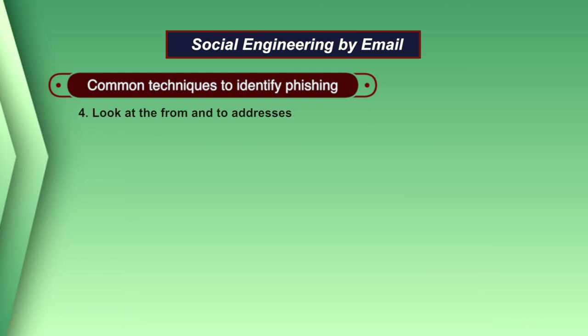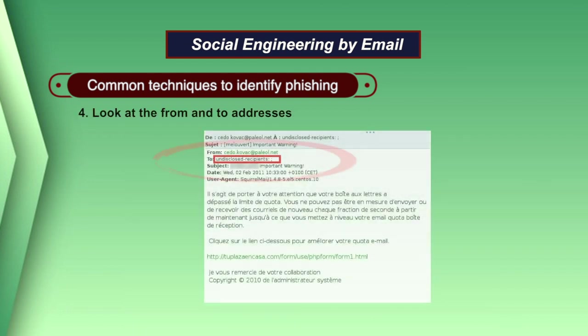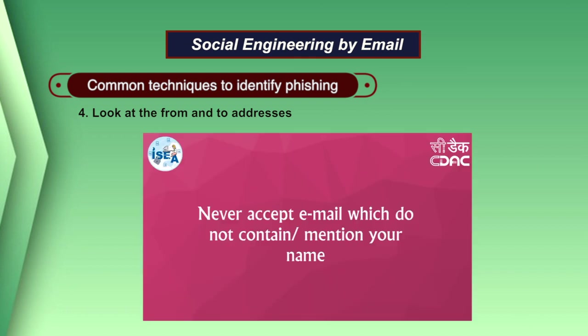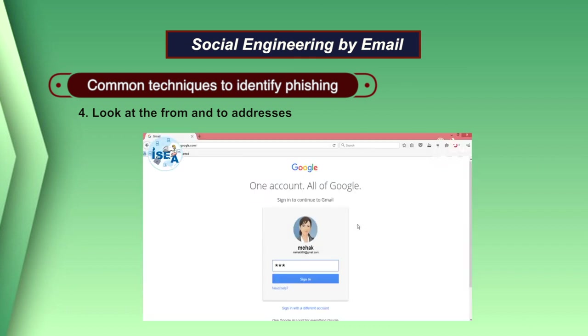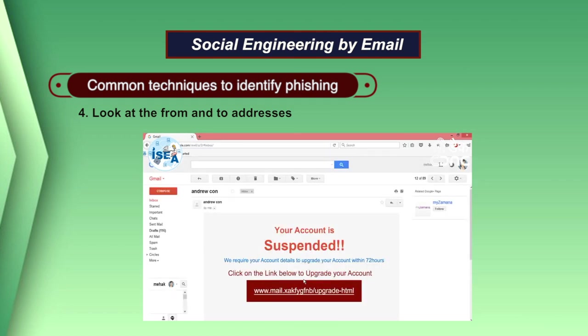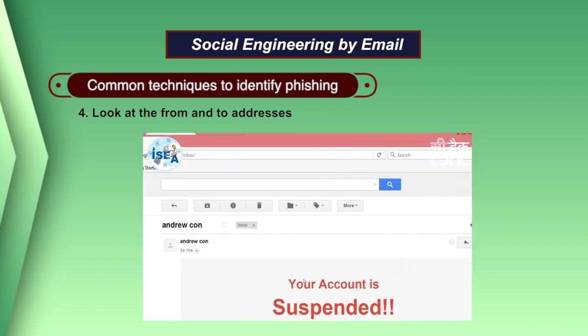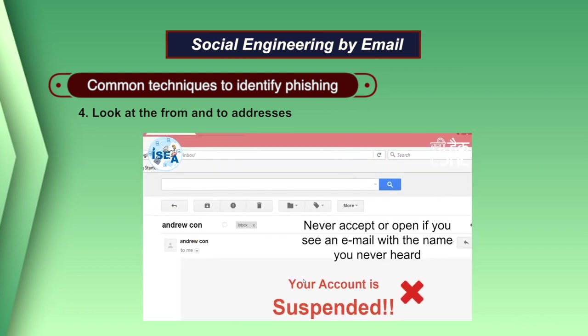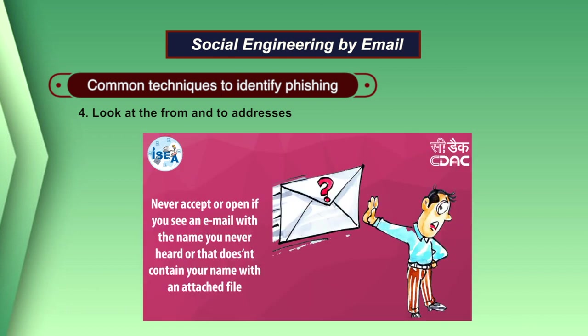Another technique to identify a phishing attack is to look at the from and to addresses. Check the mail ID from which it claims to originate. At times your own mail address may appear as the originator, and the to field may show a large list of recipients — you should also be cautious. Legitimate emails will most likely be sent directly to you and you only. You may also see undisclosed recipients, which is something to keep an eye on.